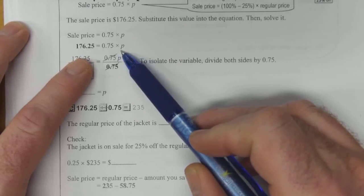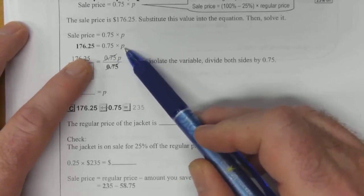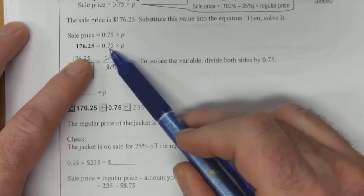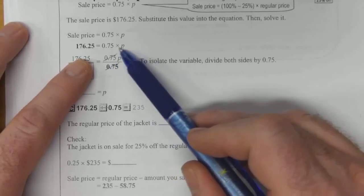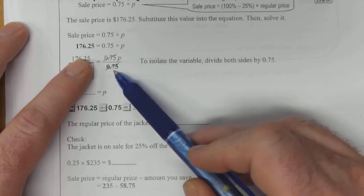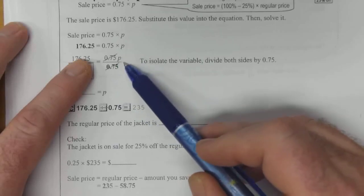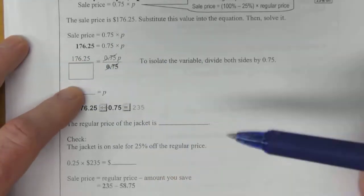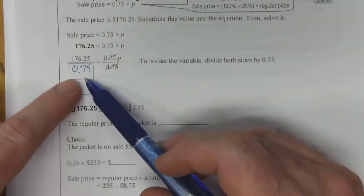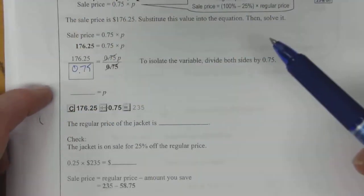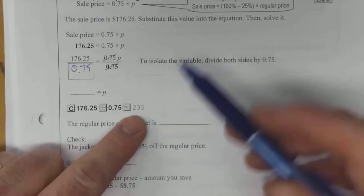So once we've got that set up, we want to isolate P. Right now it's 0.75 times P, so we need to do the opposite. We're going to divide by 0.75 on the right to get P by itself. But if we do it on the right, we have to do it on the left as well. So we're going to divide by 0.75 on the left. Now when you do that on your calculator, your answer is going to be $235.